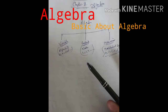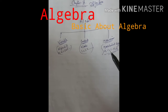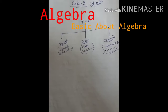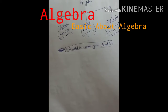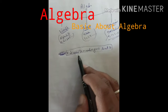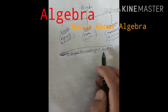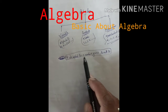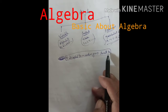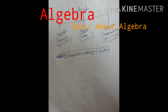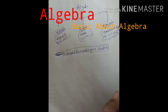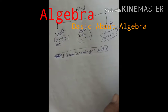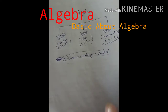अब variable का काम क्या है? Constant का काम क्या है? और expression का काम क्या है? यह मैं आपको बता देता हूँ। For example, मैं एक question बताता हूँ। देखो: '4 is added to a number gives result 10.' Equations मतलब problems या questions जिनको equations कहते हैं।